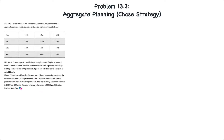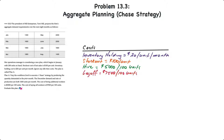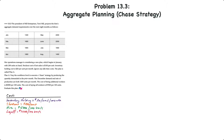Before we get into it, let's list all the costs. Inventory holding costs equal $20 per unit per month. Stockout costs equal $100 per unit. The cost to hire additional workers when we increase capacity is $5,000 per 100 units, and the cost to lay off workers when we no longer need them is $7,500 per 100 units. In essence, each worker is capable of producing 100 units.